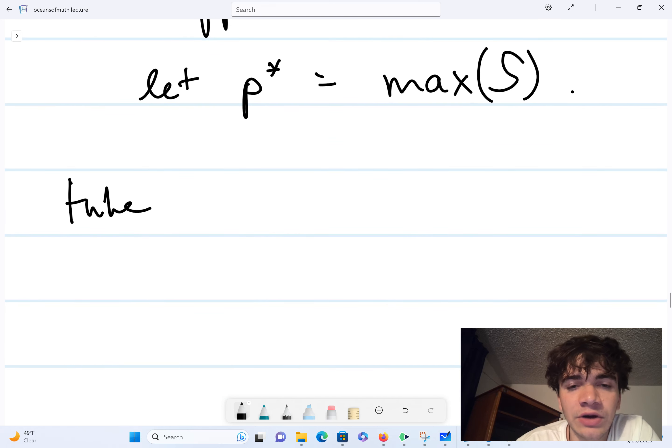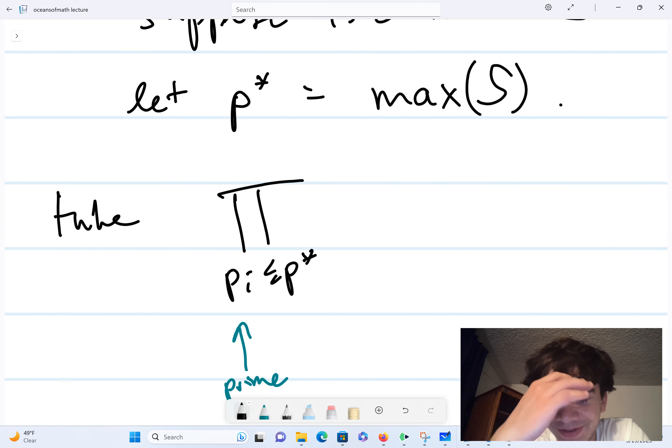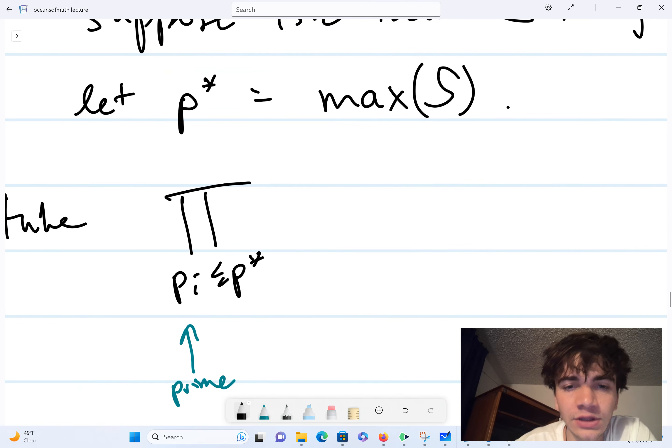So I'm going to go ahead and take the product of all p prime, all p_i less than or equal to p star, where this is just any prime number. It doesn't have to be 3 mod 4. So I'm going to take the product of all primes less than or equal to p star, and I'm going to add 1.